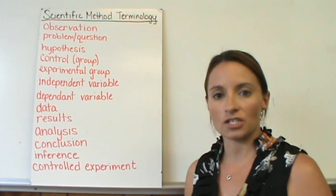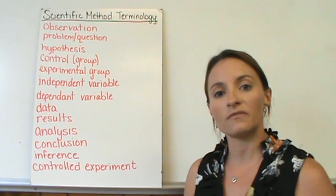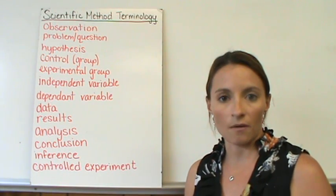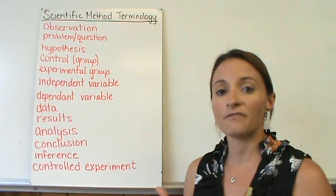Quantitative observations deal with a quantity of something. So if something is a quantitative observation, it's going to include a number. Observations are information you collect about something that include your five senses.